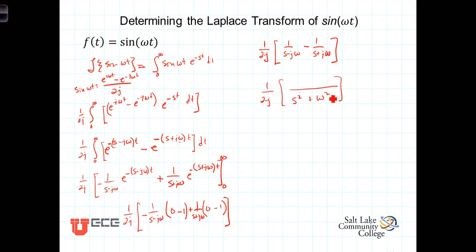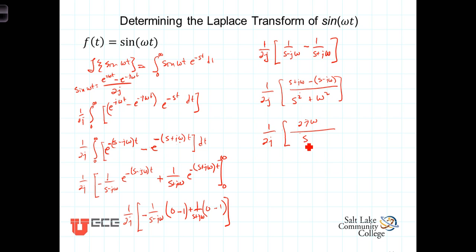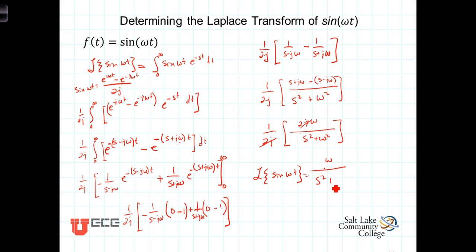In the numerator we have s plus j omega minus s minus j omega. The s's cancel, and j omega minus negative j omega gives 2j omega. So we have 1 over 2j times 2j omega in the numerator over s squared plus omega squared in the denominator. The 2j cancels the 2j, and we're left with the Laplace transform of the sine of omega t equals omega over s squared plus omega squared.